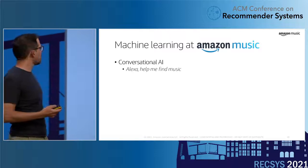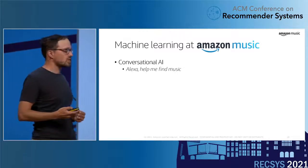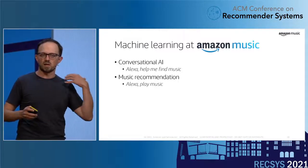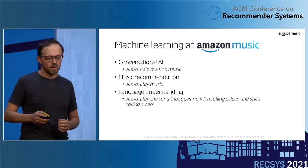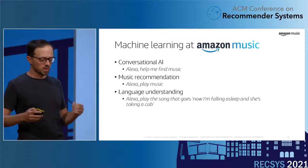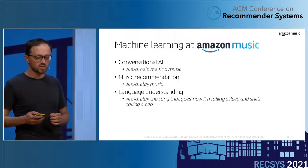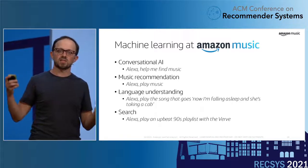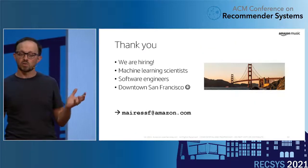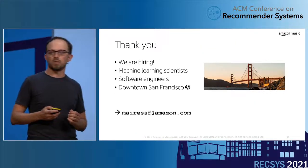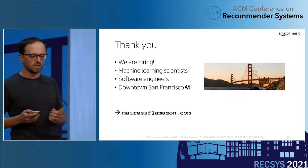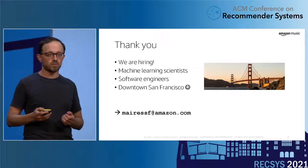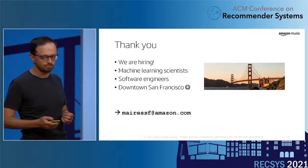Beyond conversational AI, there are lots of other interesting projects at Amazon Music, like focusing on music recommendation — what do we serve when a user says 'Alexa, play music?' We also have a great team focusing on language understanding to parse complex Alexa utterances, and a search team that focuses on finding the right entity given a complex set of user constraints. If you're interested in any of those projects, feel free to email me. We're looking for machine learning scientists and software engineers in San Francisco.